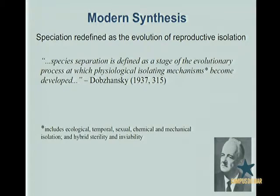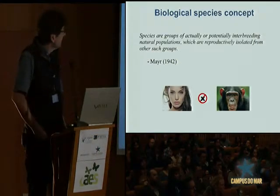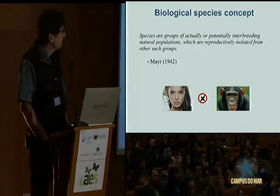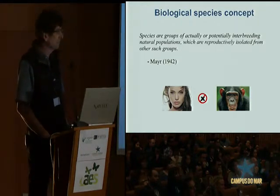Already by 1937, Dobzhansky had defined what speciation really was. He's not known for defining the biological species concept, but it's pretty clear that speciation in his view was the evolution of reproductive isolation. The biological species concept was published in 1942. And from this point on, the study of speciation became the study of the evolution of reproductive isolation.